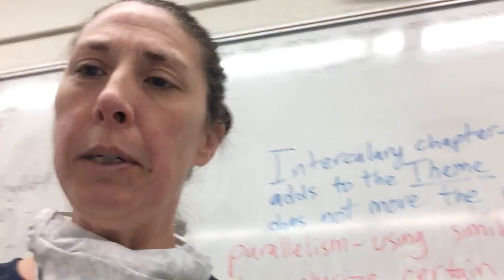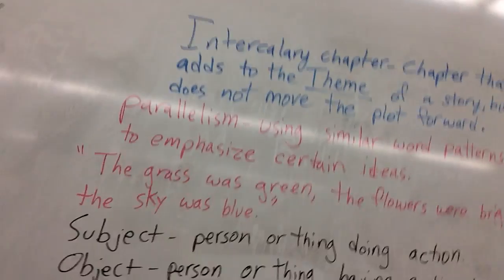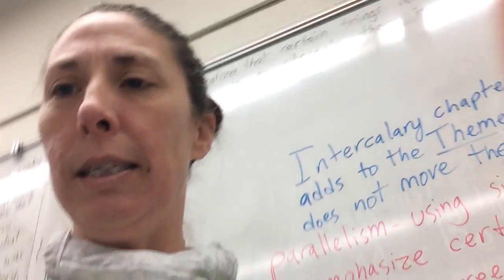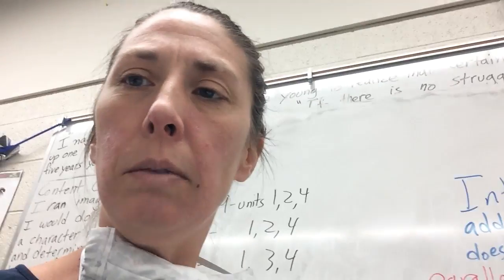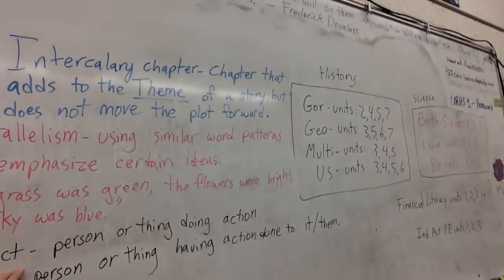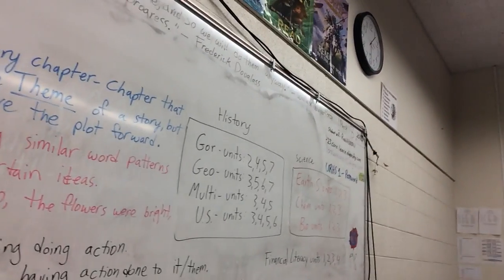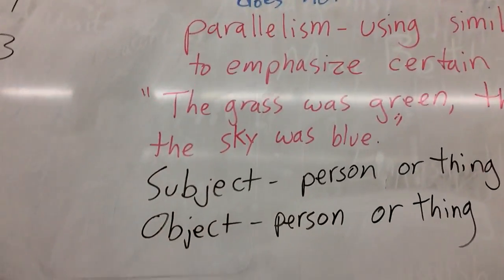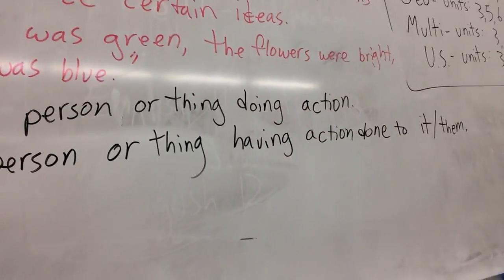Also, subject and object — I want to make sure that you know what those are. The subject is the person or thing doing the action of the sentence — or people or things if there's more than one subject. The object is a person or people, or thing or things, having the action done to them. So subject is the person or thing doing the action; object is the person or thing having it happen.